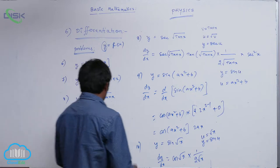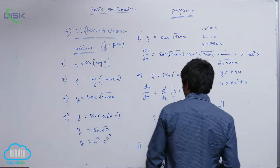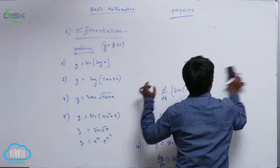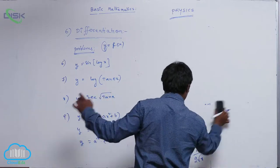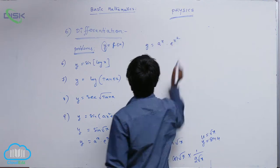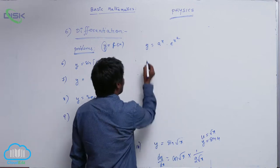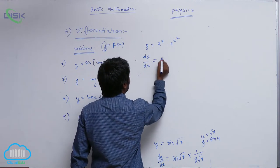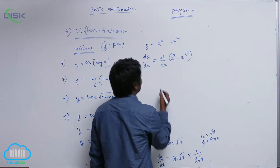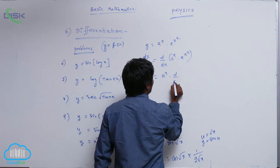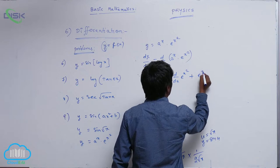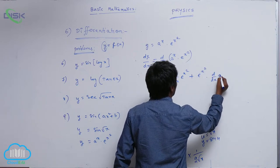The last one is y is equal to a power x into e power x squared. It is like f of x into g of x. So dy by dx is equal to d by dx of a power x into e power x squared: a power x into d by dx of e power x squared, plus e power x squared into d by dx of a power x.